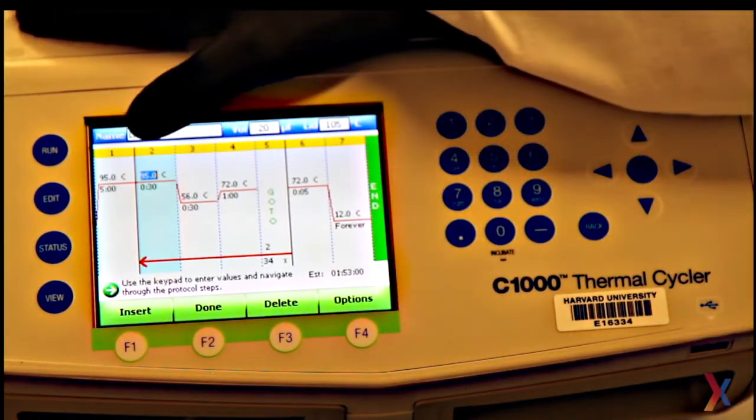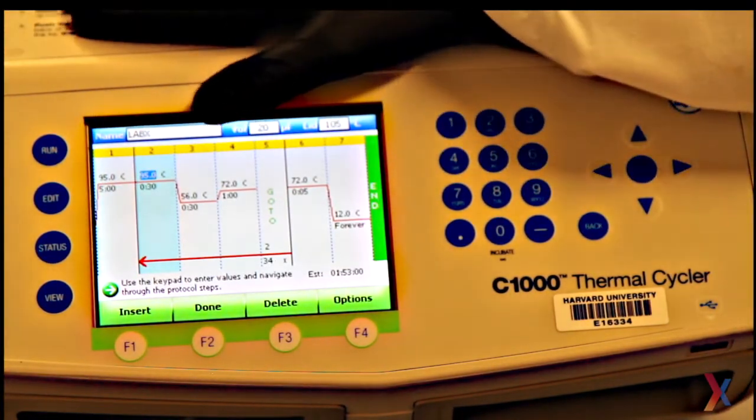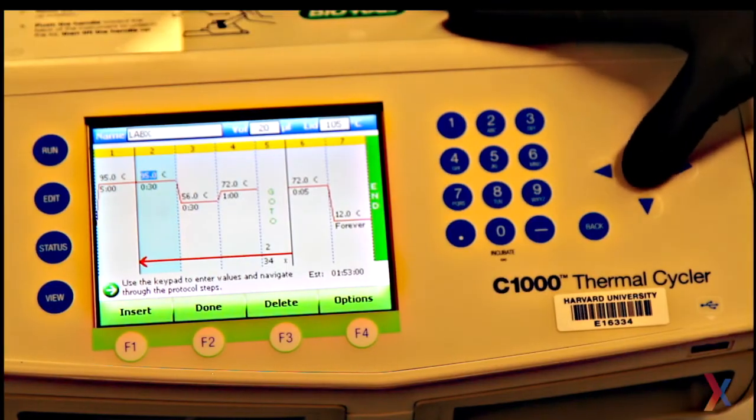Next is the denaturation step within each cycle. I want this at 95 Celsius again for 30 seconds.